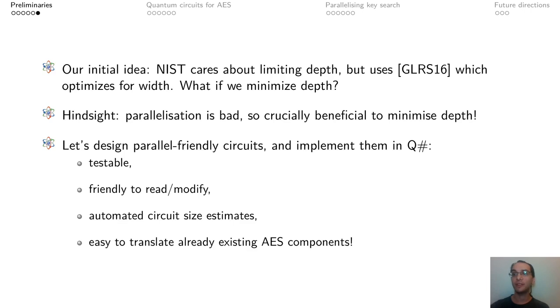NIST cares about reducing depth of the attacks, but picks D and G from the analysis by Grassl et al., that was instead aimed at reducing the width or the number of qubits used for the attack, assuming no parallelization. What would happen if we designed the circuit to reduce depth instead?